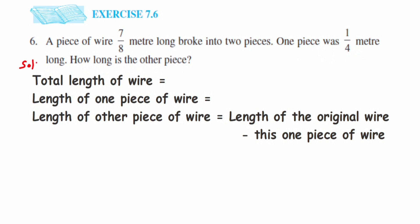They have given us two things: one is the total length of wire, which is 7/8 meter, and it's broken into two pieces. They've given the measurement of one piece, which is 1/4 meter. Let's write down: total length of wire is 7/8 meters.